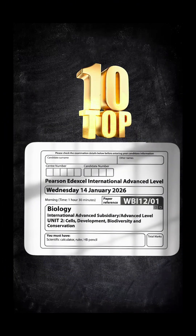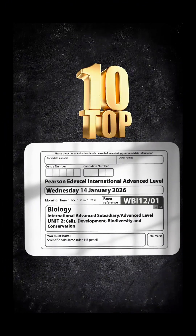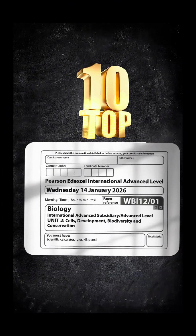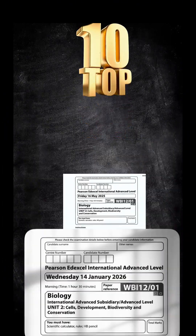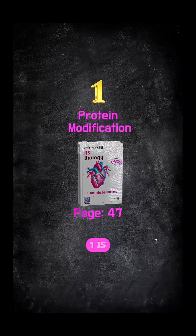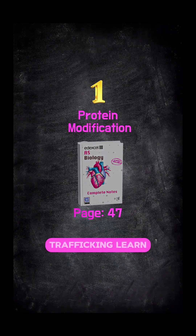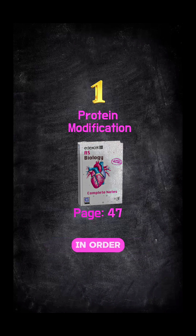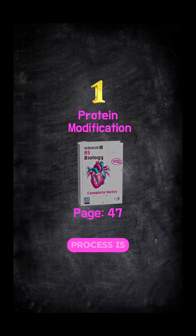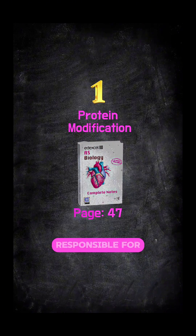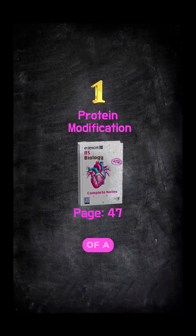Here are the top 10 most frequently asked questions in IL unit 2 biology. At number one is the process of protein modification or protein trafficking. Learn in order the organelles and the processes responsible for the formation of a protein.